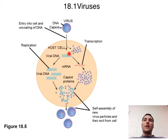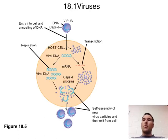So again, we enter the cell, we make new nucleic acids, we make new proteins, we assemble them into new viruses, and then somehow we release the viruses. We're going to get to some more specifics on this, but that was the general overview of a virus replication cycle.